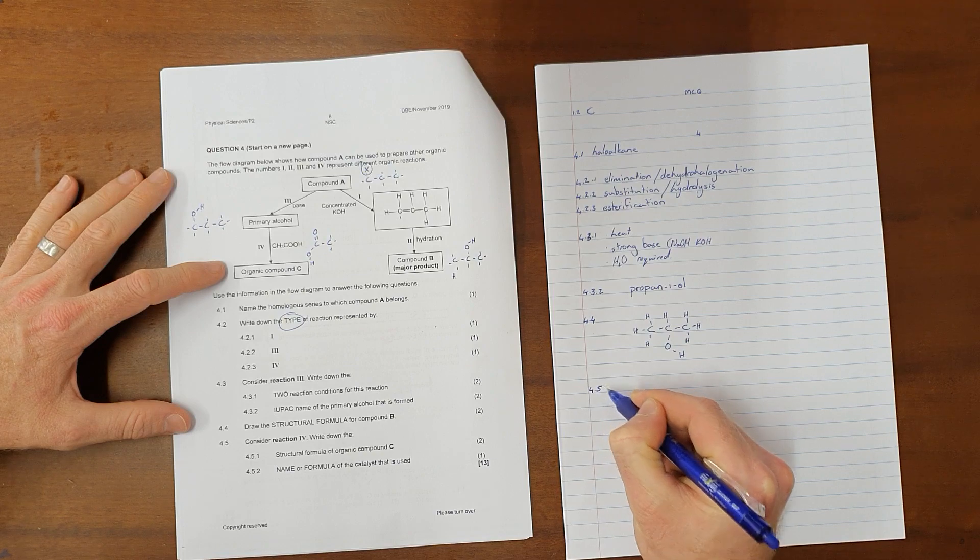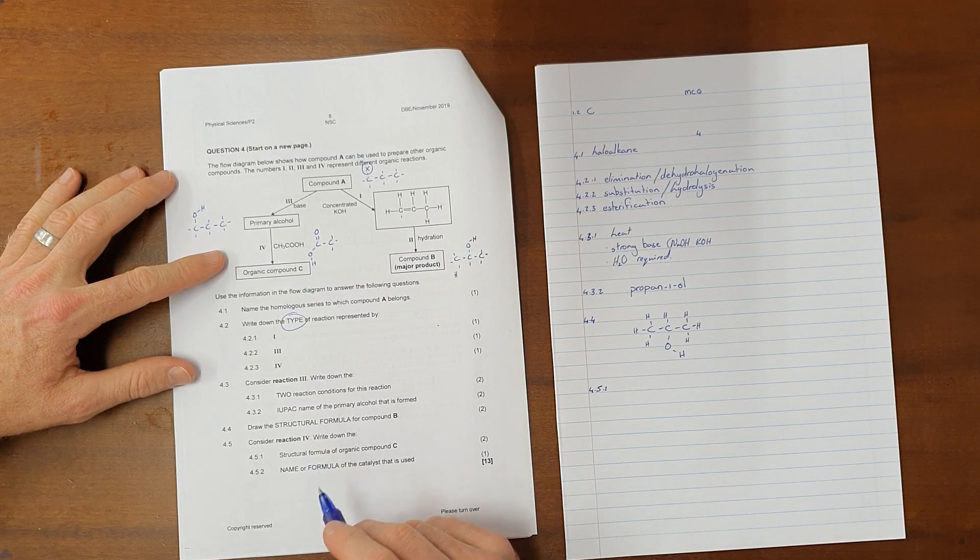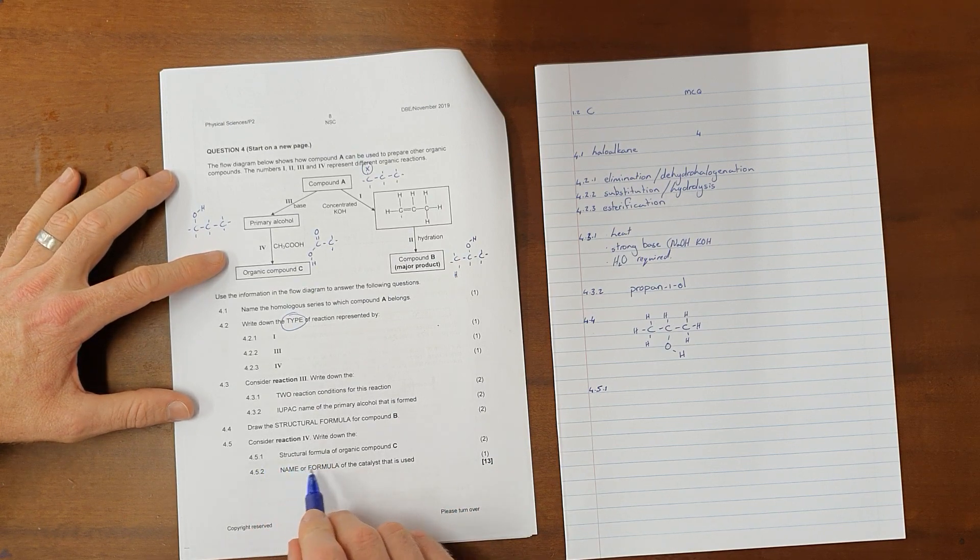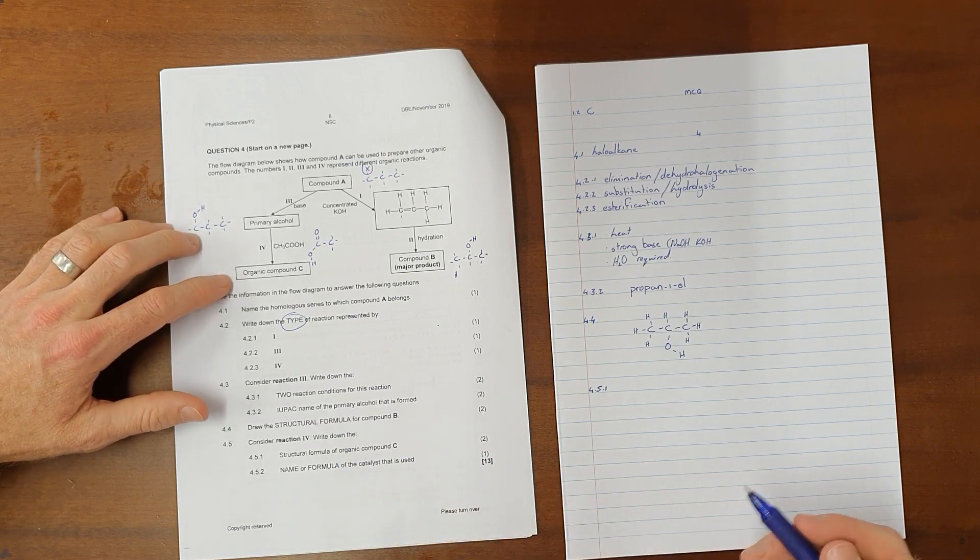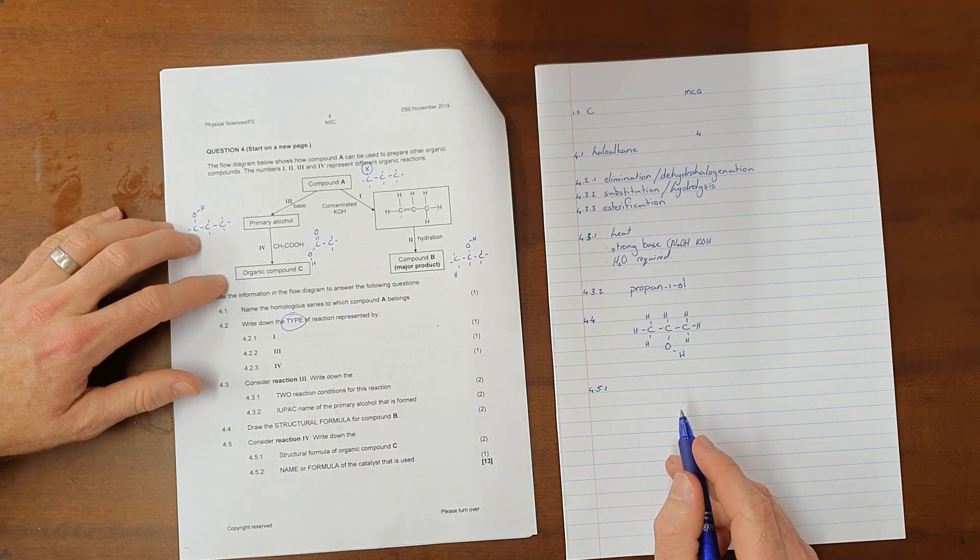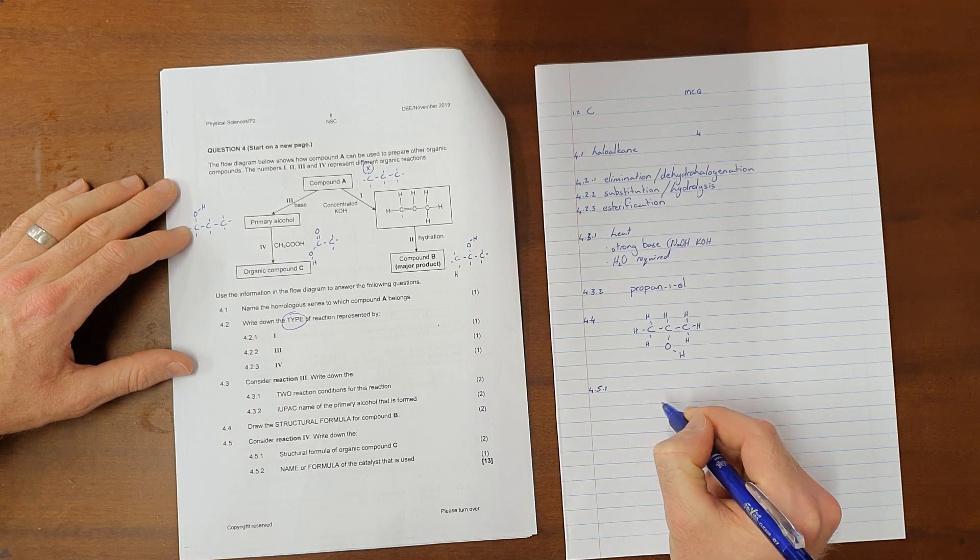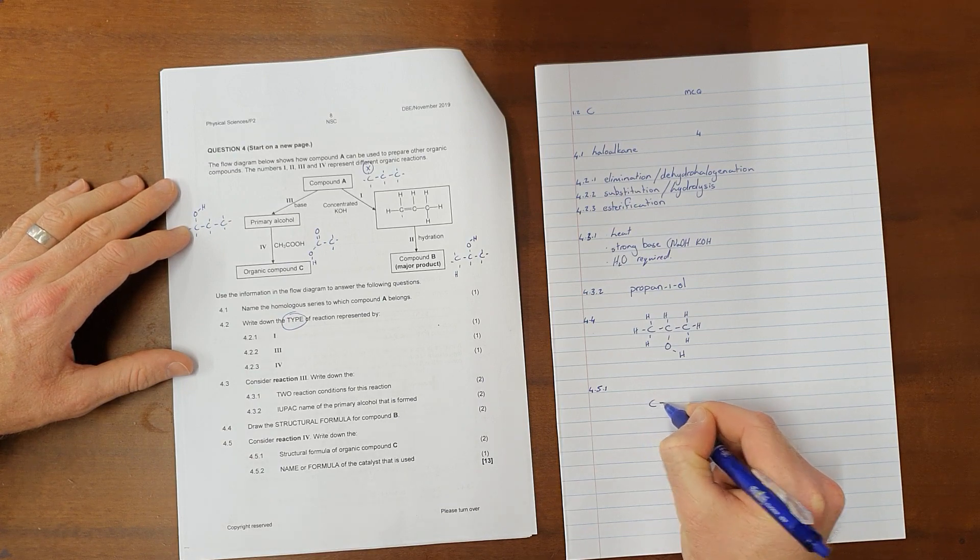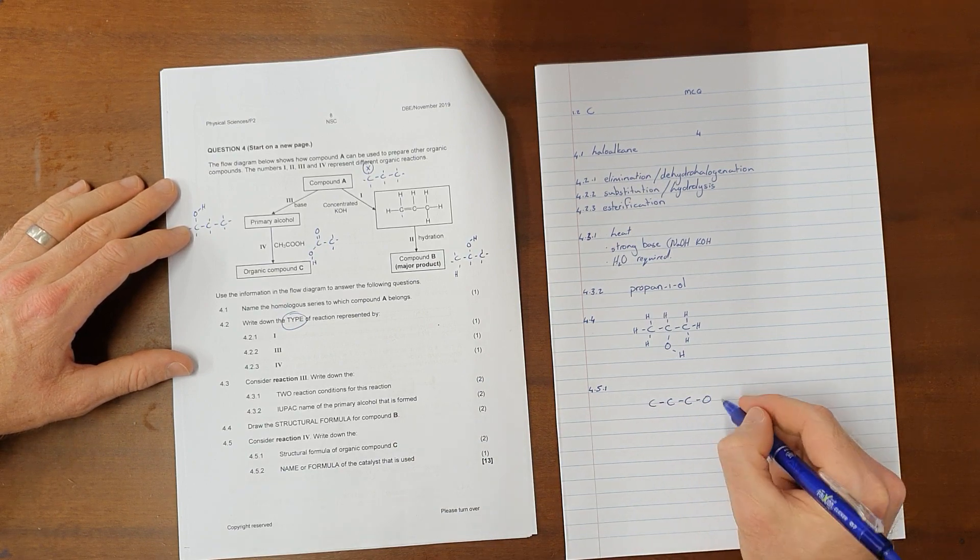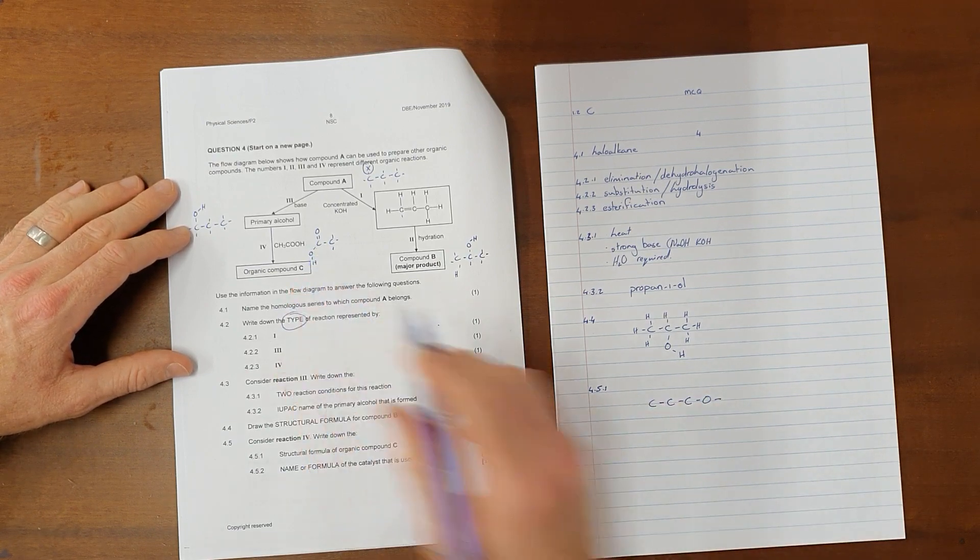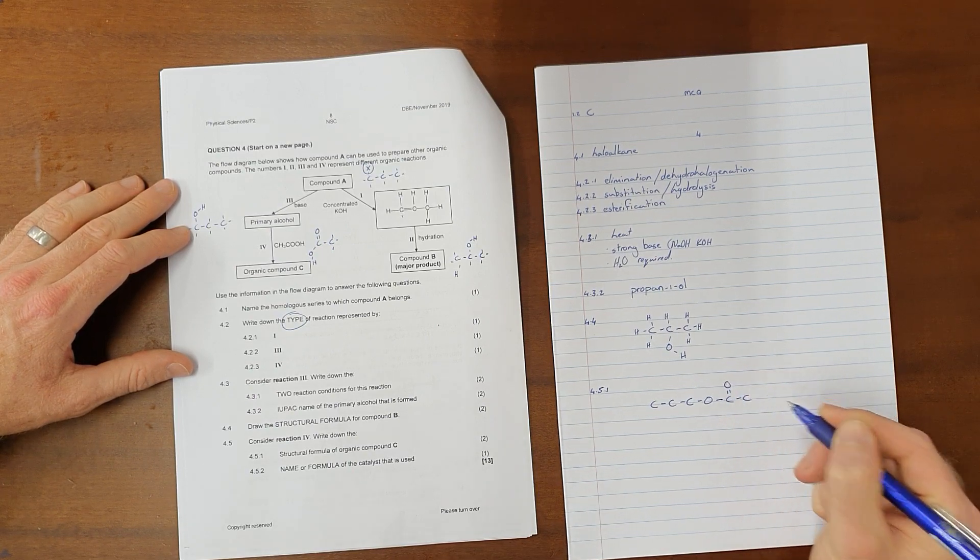Question 4.5 then reads, Consider reaction number four. This is, as we noted earlier, the esterification reaction. Write down the structural formula of organic compound C. And, organic compound C, as we have stated, is the ester that is formed between propan-1-ol and ethanoic acid. And, so, we know that an ester, when it is formed, the alcohol, the three-carbon chain in this case, is always only attached to the single bond oxygen, where the ethanoic acid is going to be attached to the double-bonded oxygen as well. And, once again, important to remember that every single carbon must have its four bonds that are formed, and you must draw in every single one of those hydrogens as they have bonded.